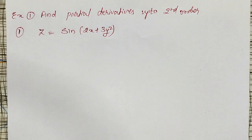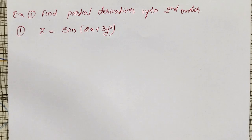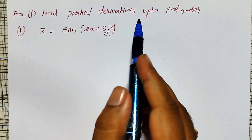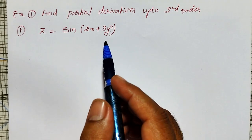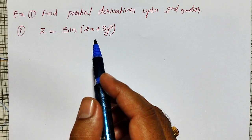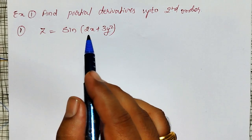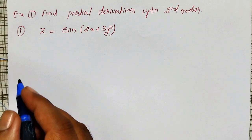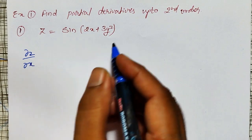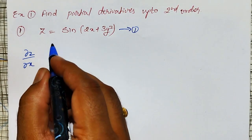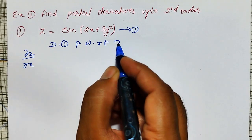Welcome friends. In this video I am going to discuss how to find partial derivatives with a simple example — find partial derivatives up to second order. What are the possible second order partial derivatives? I will calculate first. z is a function of x and y, therefore there exist two partial derivatives. The first partial derivative is ∂z/∂x, let me call this equation number one.